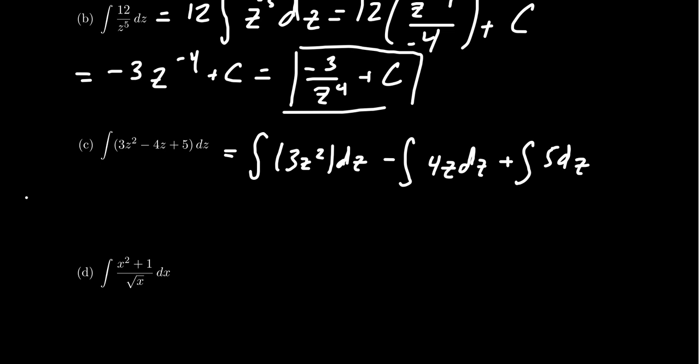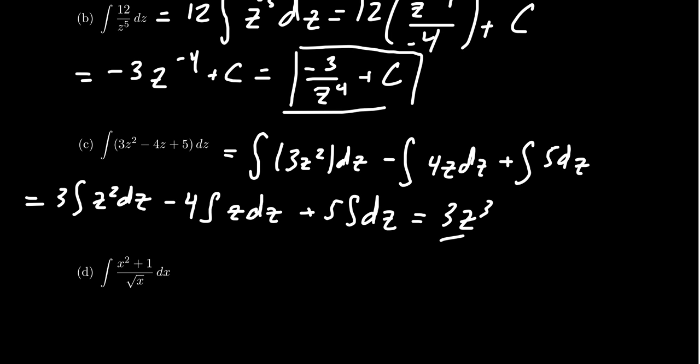So because of the sum and difference rule, you can break up into three integrals. Because of the constant multiple rule, you can pull out those multiples: three times the integral of Z squared dZ, minus four times the integral of Z dZ, and then plus five times the integral of dZ. And then using the power rule, we end up with three Z cubed over three plus a constant, we'll call it C1, minus four times Z squared over two plus another constant C2, and then we're going to add to this five Z plus another constant C3, like so.